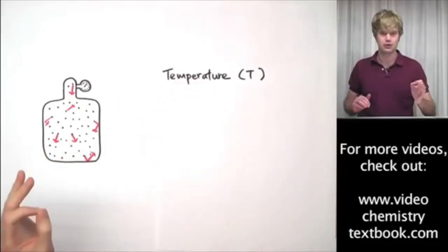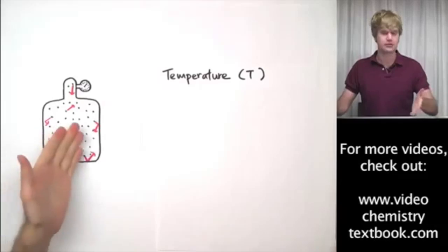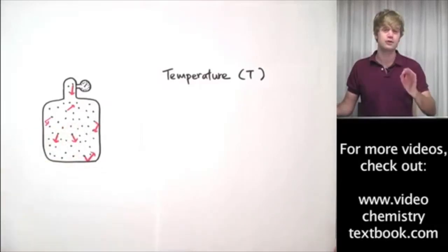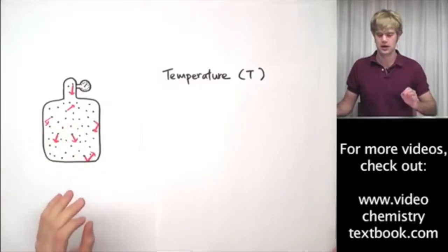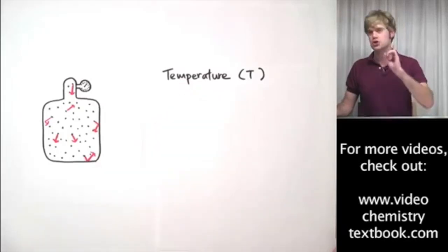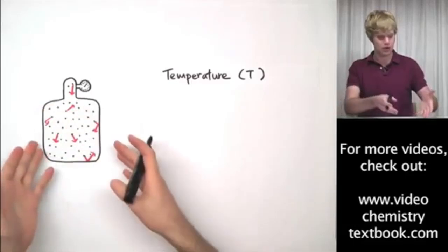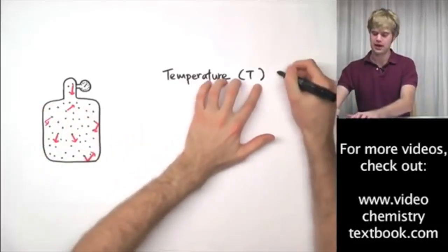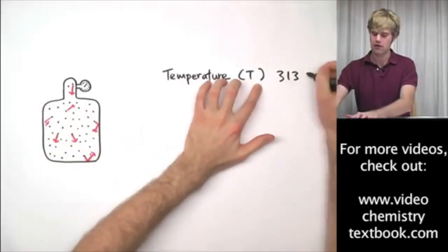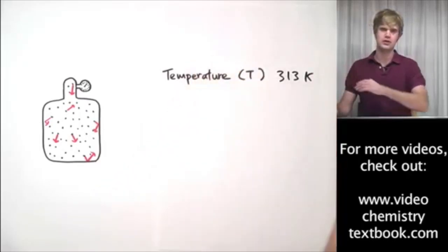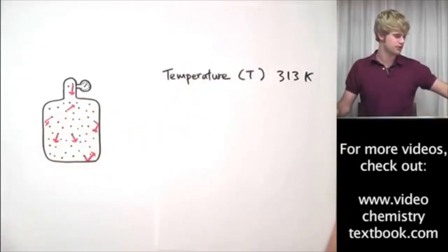So one of the things that we could do is we could say what its temperature is. The higher the temperature, remember, the faster these gas particles are moving around. So temperature is very important when we talk about gas. Temperature for gases should always be reported in Kelvin. So we could say, for example, that the temperature of this guy here is 313 Kelvin. That's how hot these gas particles in the sample are.